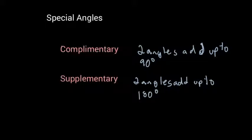So what does that look like? So complementary, you have two angles. Angle one and angle two form a right angle. And supplementary, you'd have two angles. So we'll call that angle three and angle four. So they add up to a line, which is 180 degrees.